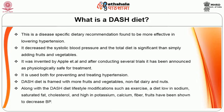Along with the DASH diet, lifestyle modifications such as exercise, a diet low in sodium, saturated fat, and cholesterol, and high in potassium, calcium, fiber, and fruits have been shown to decrease hypertension. The major sources of energy should be from whole grain cereals and legumes. Vegetables and fruits intake should be restricted as per the dietary management for diabetes, and the others can be taken liberally.